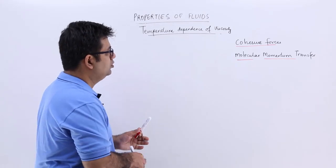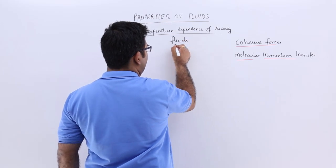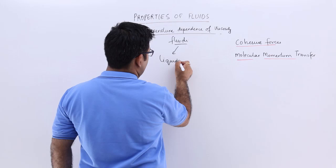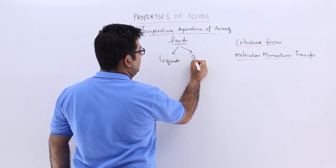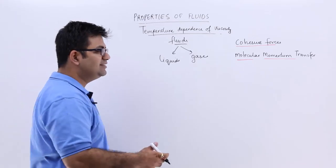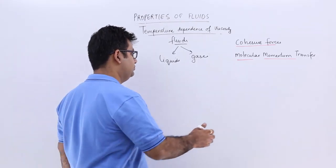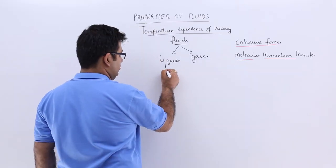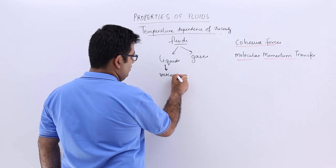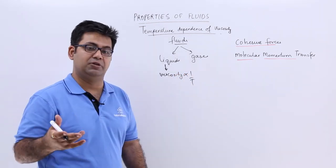As we talked about, fluids are of two types: you have liquids and then you have gases. So if you increase the temperature of a liquid, the viscosity will decrease. So the viscosity is inversely proportional to temperature.